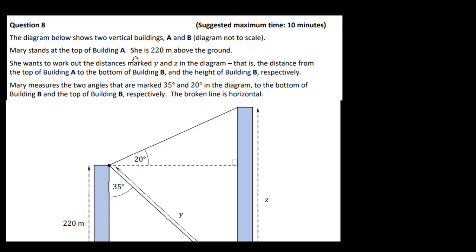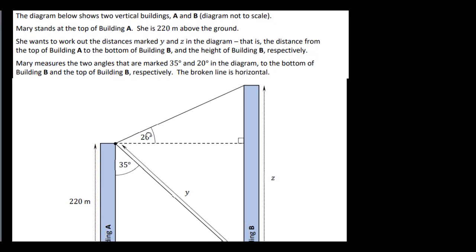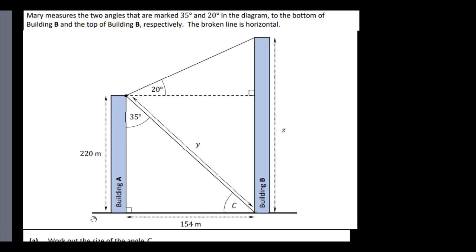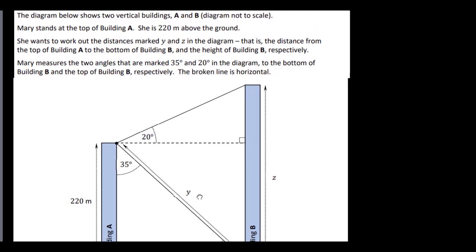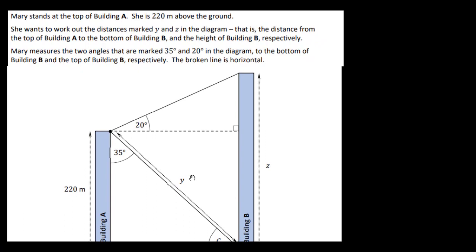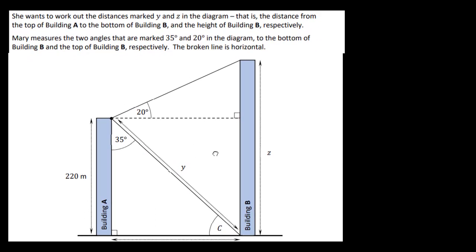The diagram shows two vertical buildings A and B — the diagram is not to scale. Mary stands at the top of building A, 220 meters above the ground. We need to work out the distances marked Y and Z — the distance from the top of building A to the bottom of building B, and the height of building B respectively. Mary measures two angles: 35 degrees to the bottom of building B and 20 degrees to the top of building B.